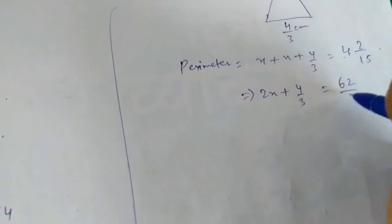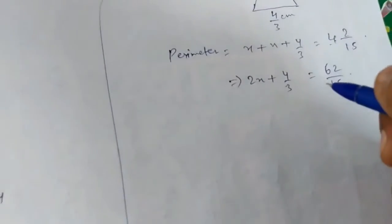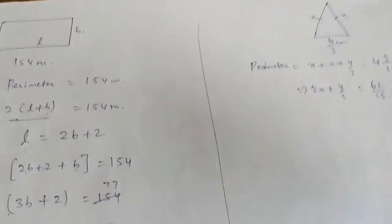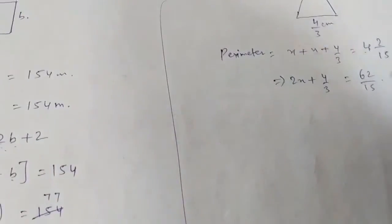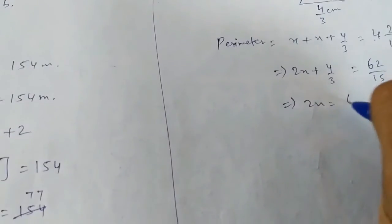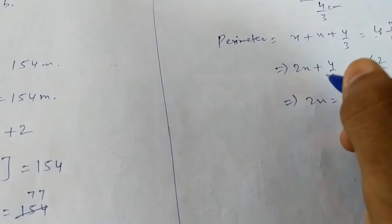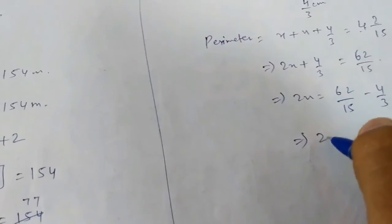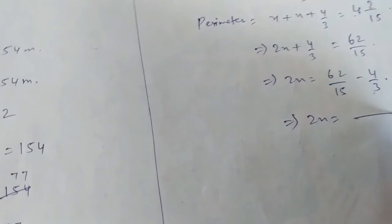2x plus 4 by 3 equals 62 by 15. So 2x equals 62 by 15 minus 4 by 3.